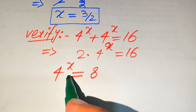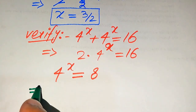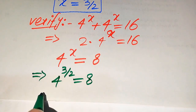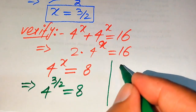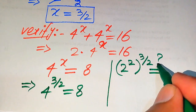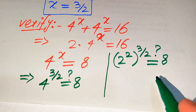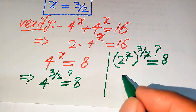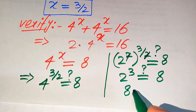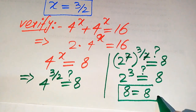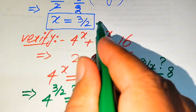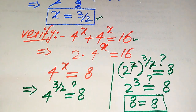We substitute x equals 3/2 into the left-hand side: 4 to the power of (3/2). Writing 4 as 2 squared, we get (2 squared) to the power of (3/2). Applying the exponential law, the 2s cancel and we get 2 to the power of 3, which equals 8. Since the left-hand side equals the right-hand side, x equals 3/2 is confirmed as a valid solution.